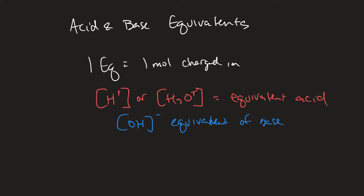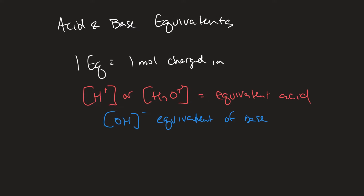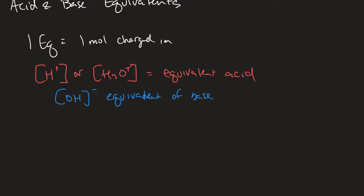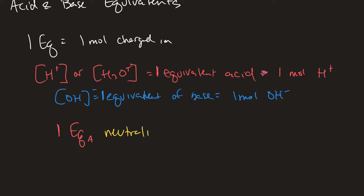Much like when we looked at one EQ before — where one EQ is equal to one mole of charged ions — we have the same idea here. One equivalent of an acid is equal to one mole of hydrogen ions, and one equivalent of a base is equal to one mole of hydroxide ions. This is really useful because one equivalent of an acid always neutralizes one equivalent of a base.